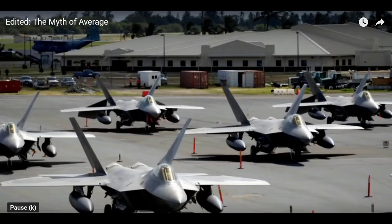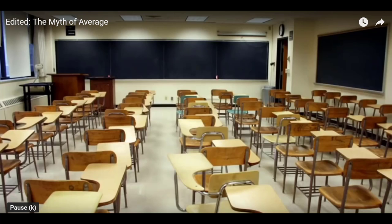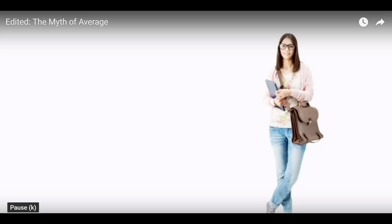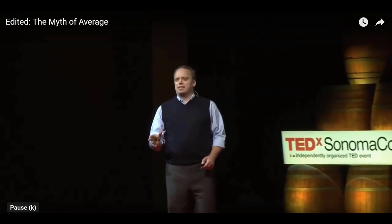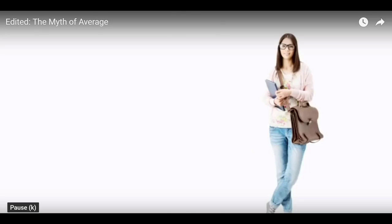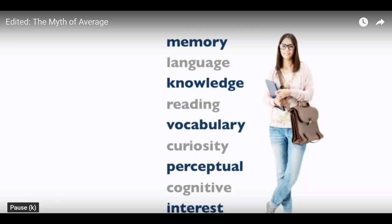Most of us have never sat in the cockpit of a $150 million fighter jet, but we've all sat in the classroom. Even though we have one of the most diverse countries in the history of the world, and even though it's the 21st century, we still design our learning environments — like textbooks — for the average student. We call it age-appropriate and we think it's good enough, but of course it's not. What does it even mean to design for an average student? A student is not one-dimensional, like struggling to gifted. Students vary on many dimensions of learning, just like they vary on dimensions of size.